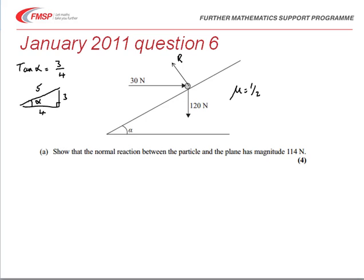For this first part of the question we're going to resolve forces perpendicular to the plane. We've got R acting away from the plane, and the other two forces acting into the plane. Taking the 30 newton force first, the angle alpha is as I've shown it there. If we want the force which is into the plane we need this component, so it's opposite alpha.